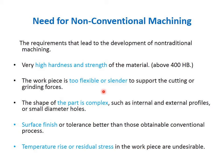Also, a workpiece may be too ductile or too flexible to be cut by normal conventional cutting techniques. In conventional cutting — like turning, milling, drilling, and grinding — we apply a lot of cutting force. Recall the merchant circle diagram studied before the mid-semester. When conventional machining is happening, different types of cutting forces are exerted onto the workpiece. If the workpiece is too flexible, it may not sustain those cutting forces generated by the cutting tool.